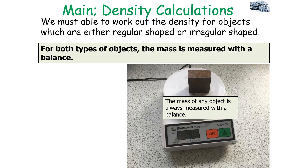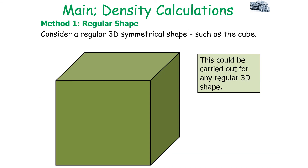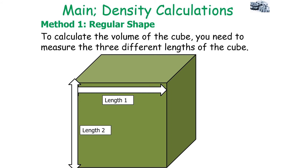We need to be able to work out density for objects via experimental methods, for either regularly shaped or irregular shaped objects. For both types of objects, the mass is measured with a balance. For a symmetrical or regular shaped object, you must consider the symmetrical shape produced and take measurements using either a ruler, a screw gauge micrometer, or a vernier caliper.